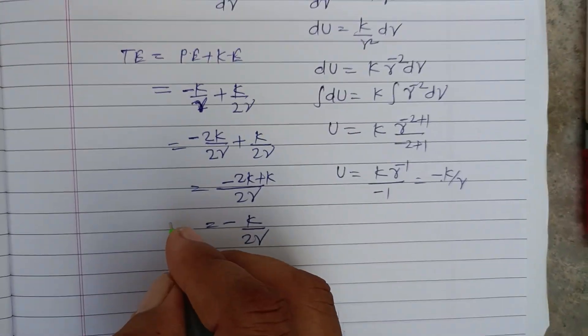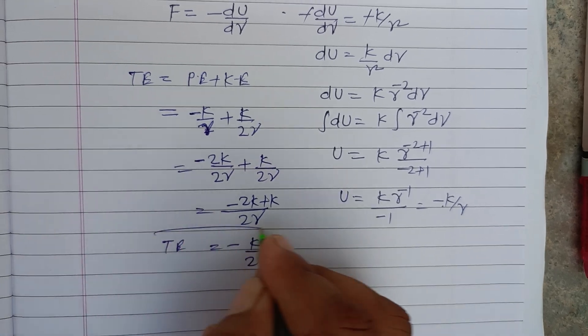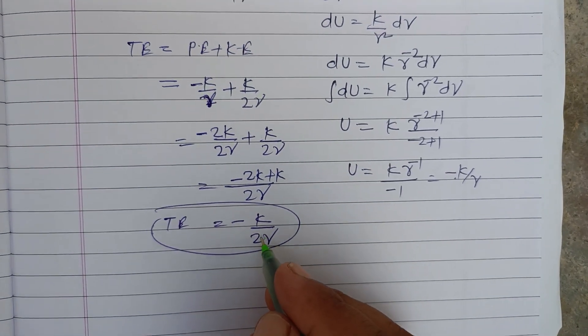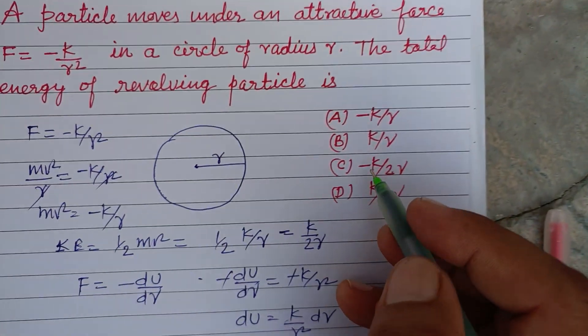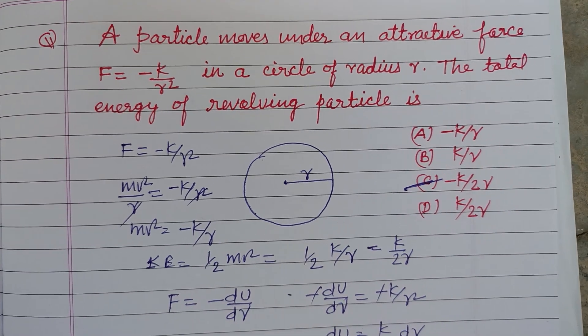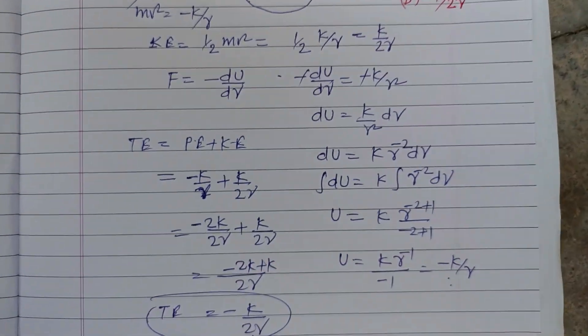So total energy of the particle revolving around the circle is minus K over 2R, which is found in option C. So option C is correct. I hope you got it. Please like the video, subscribe the channel. Thanks for watching.